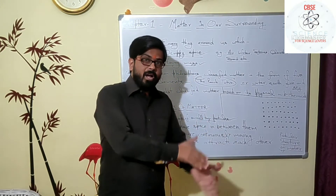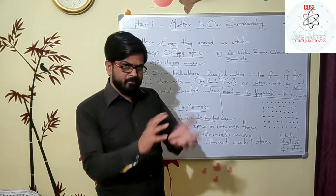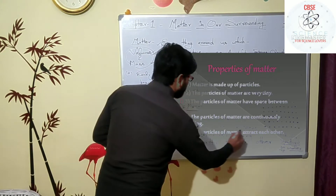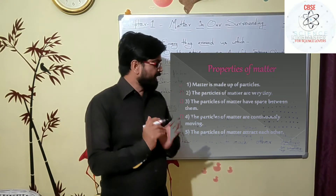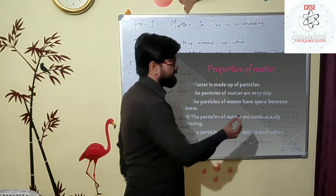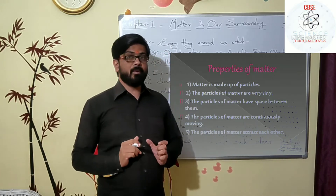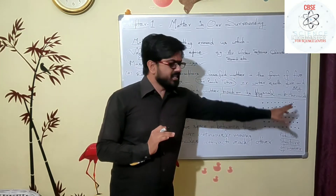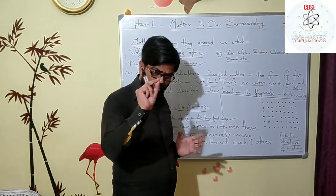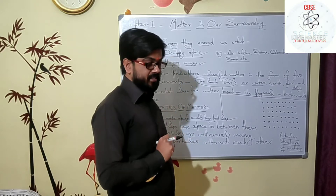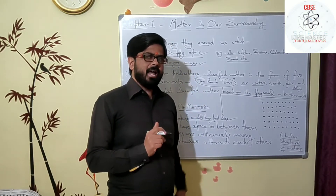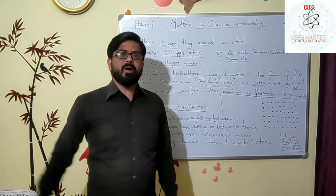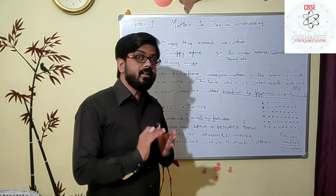When we mix one matter to another, only a particular structure can mix like that. This brings us to the second physical property of matter: matter particles have space in between them. All the matter particles have space in between them. You can see the particular structure of matter, in which all matter particles are arranged in a specific manner. That space between two particles is called the interparticular space.